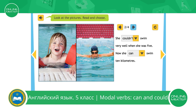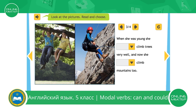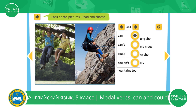Next picture. Look at these pictures. What is the girl doing? Yes, she's sitting in the tree. Let's complete the first sentence. When she was young, she climbed trees very well. She can, can't, could, couldn't. Could. When she was young, she could climb trees very well.